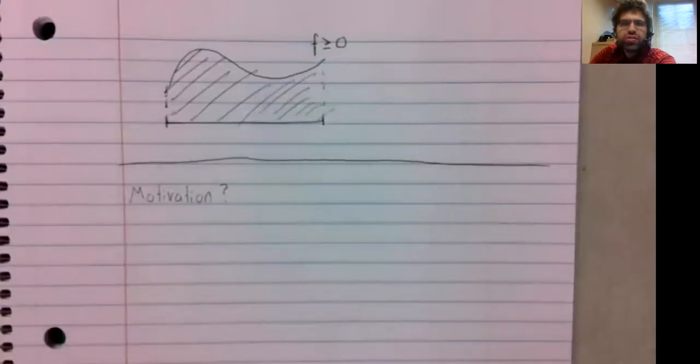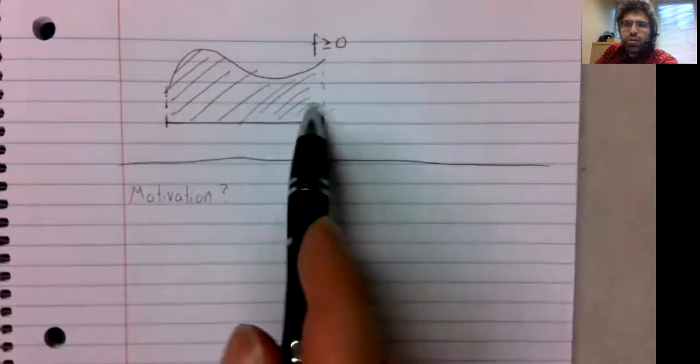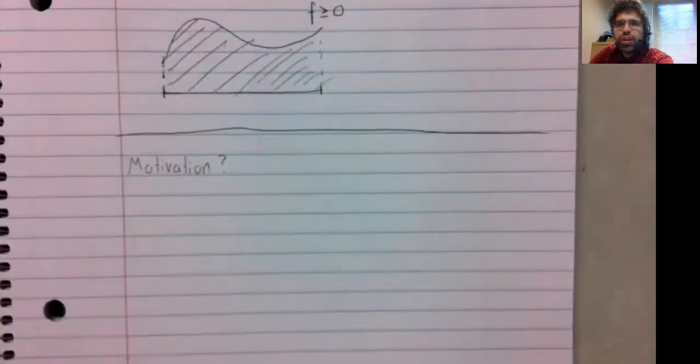Derivatives are rates of change. It's not hard to imagine why you'd want to know how fast something is changing. Something like this, by contrast, comes across more as a problem of pure geometry. Who cares?